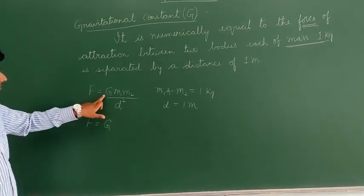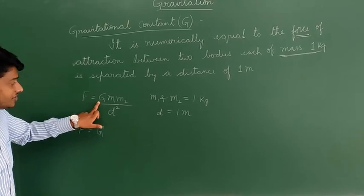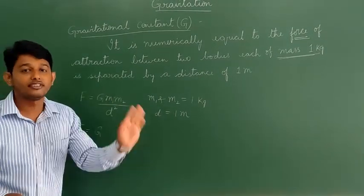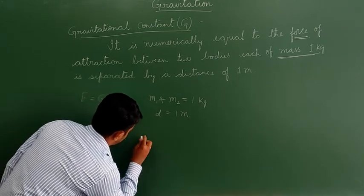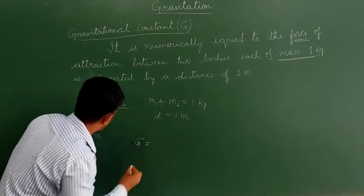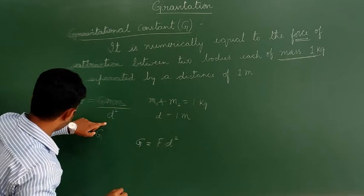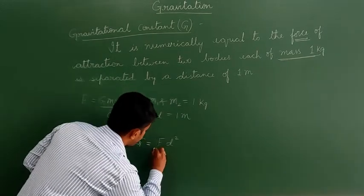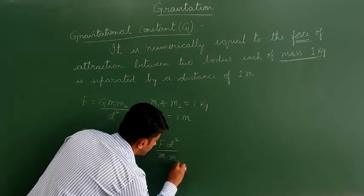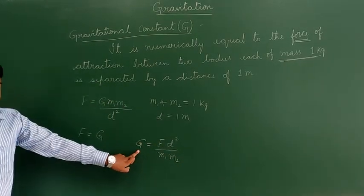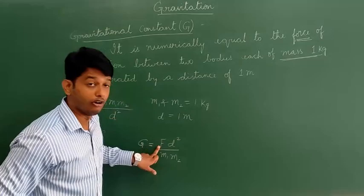Now we need to know the SI unit of G. Rearranging the formula with G on the left-hand side: G equals F·d² divided by M1·M2. The SI unit for force is Newton and the SI unit for distance squared is meter².